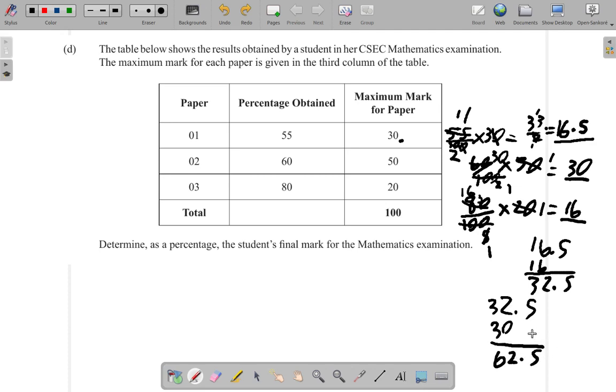30 and 30 is 60, and the 2.5 gives 62.5. So the total marks that the person obtained is 62.5 marks.